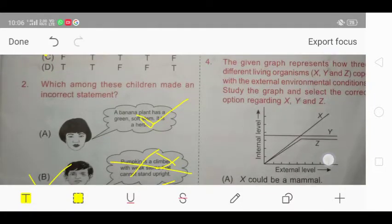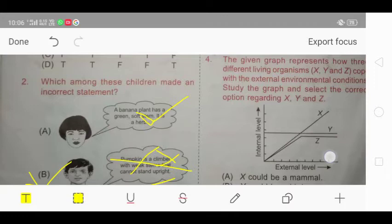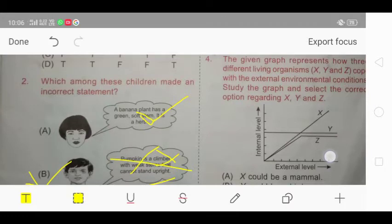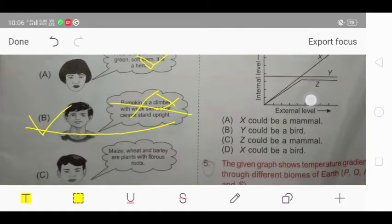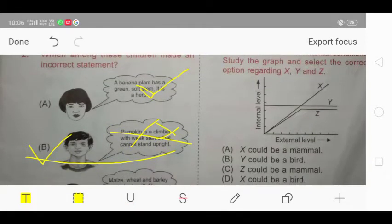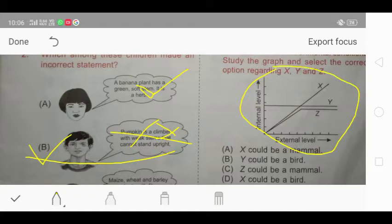Our next question is question number 4, which says that the given graph represents how different living organisms X, Y, Z cope with external environmental conditions. Study the graph and select the correct option regarding X, Y, and Z. As you can see, here is a graph, and they have said to identify X, Y, and Z.